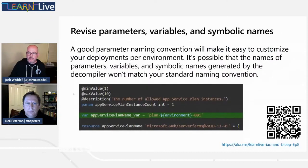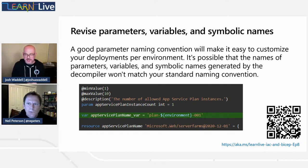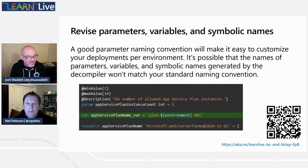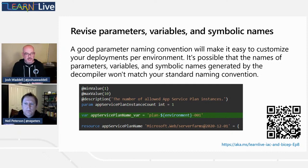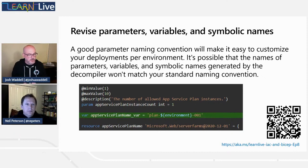Reviewing linter suggestions in your new Bicep file: we saw quite a few of those in the converted template. One that struck out right away was hard-coded locations — everything said West US — and the Bicep linter recommends against hard-coded locations. We want to use individual parameters to identify locations for resources. Pay attention to the errors and linting suggestions showing up inside Visual Studio Code and address those as you work towards your final file.